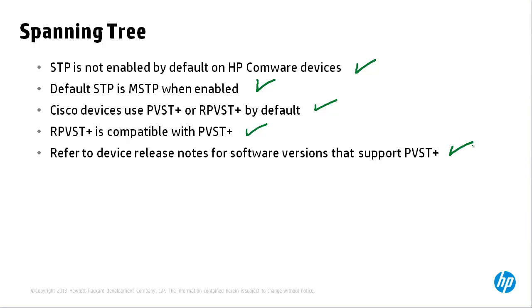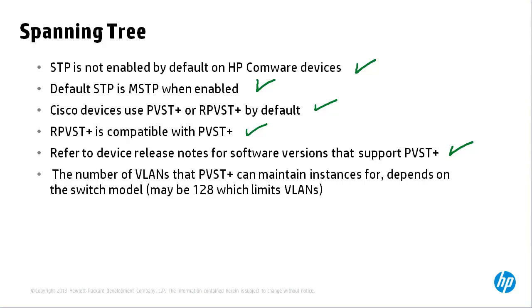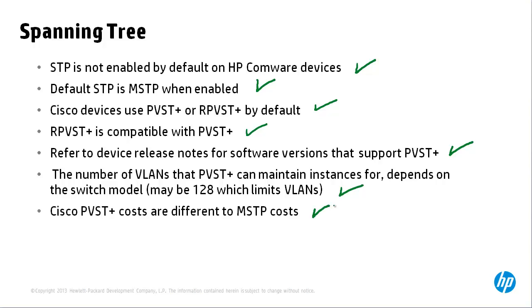Refer to the device release notes for software versions that support PVST. There is a limitation on the number of VLANs that instances can be maintained for, and this is switch dependent. Typically 128 instances can be configured on an HP Comware switch, meaning only 128 VLANs can be supported with each having its own spanning tree instance. Be aware that Cisco PVST costs are different to multiple spanning tree costs depending on whether the short or long method is used.